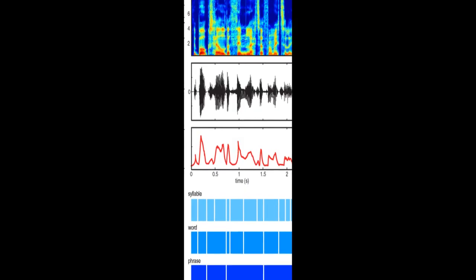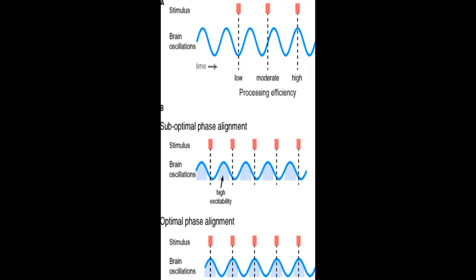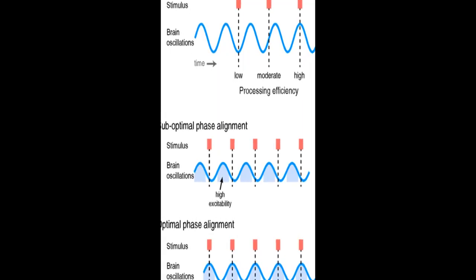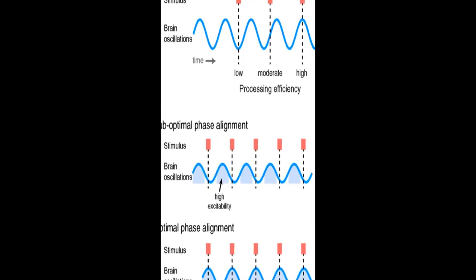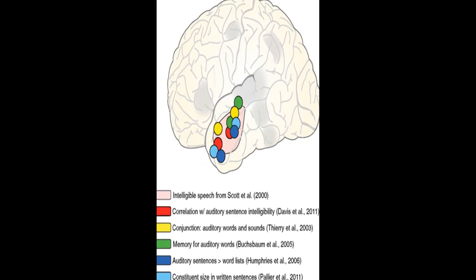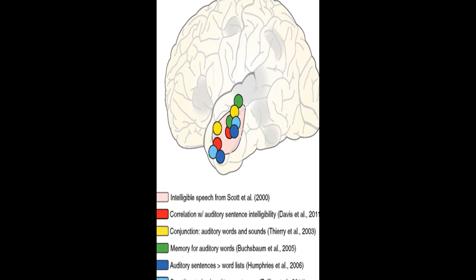Neuroimaging data shows that ongoing cortical oscillations phase lock to low-frequency information, 4 to 8 Hz, in the speech envelope, which helps increase sensitivity to relevant acoustic cues.